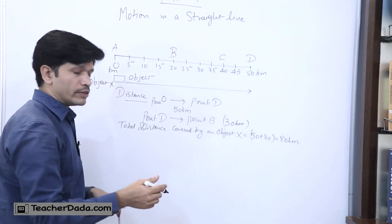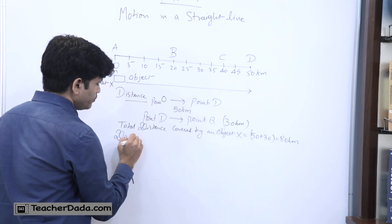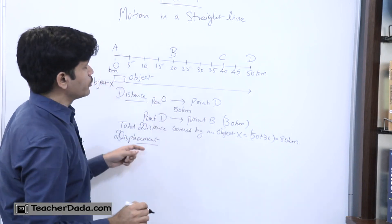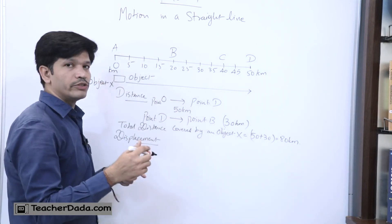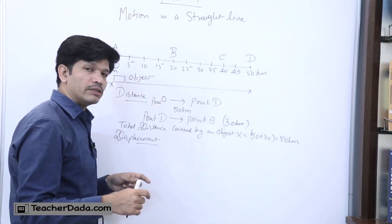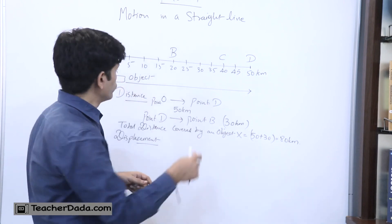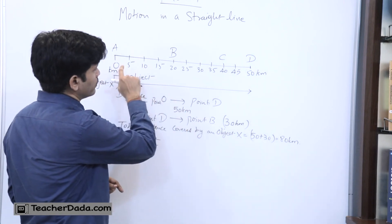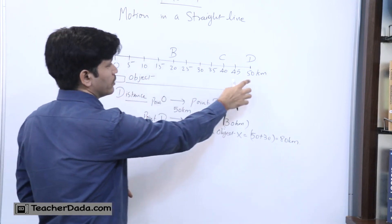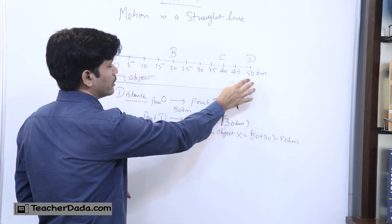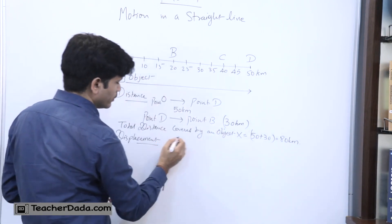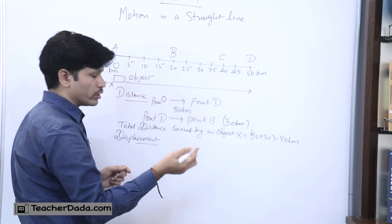Now there is another physical quantity and that is known as displacement. Displacement means the object is changing its position from one point to another in a certain time, but there is a change in direction also. So what is the total displacement if object X goes from A to D and then comes back from point D to point A?